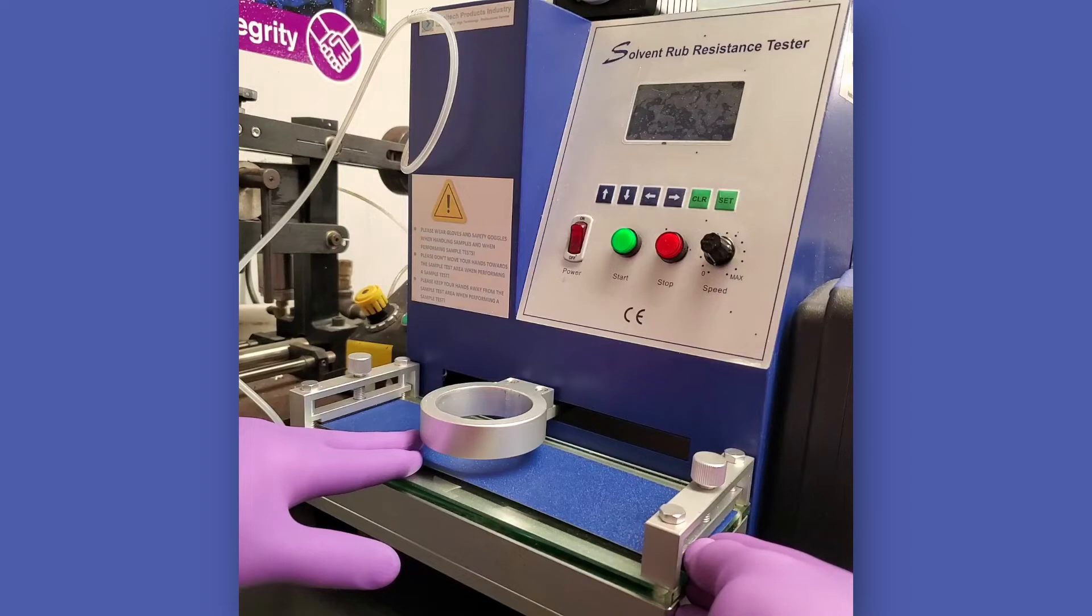The long dimension must be parallel to the rolling or longitudinal direction of the coil for coil coatings. It is imperative that the sample be flat without any high or low points in the panel testing area since this could result in false outcomes.